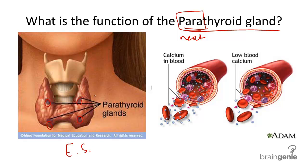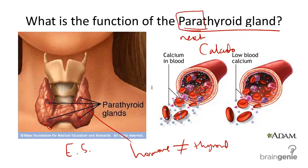The parathyroid gland is responsible for releasing hormones that counter those released by the thyroid gland, and these hormones relate to blood calcium levels. Think of the parathyroid gland as having the opposite goal of calcitonin. While calcitonin released by the thyroid gland lowers blood calcium levels, the parathyroid gland releases parathyroid hormone in order to raise blood calcium levels.